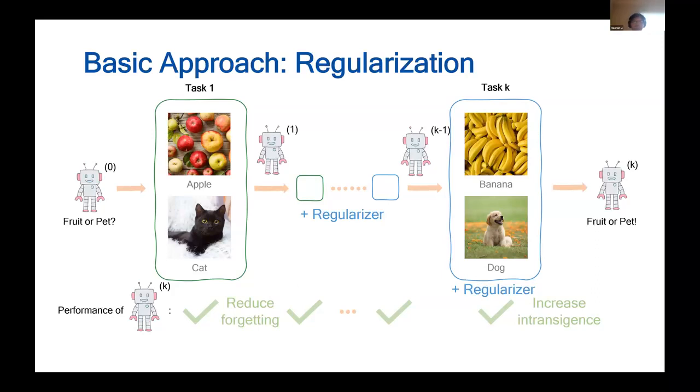In particular, I have observed that by reducing forgetting, intransience is usually increased, which is the inability to learn later tasks. This is often mentioned in the literature as the stability-plasticity dilemma.